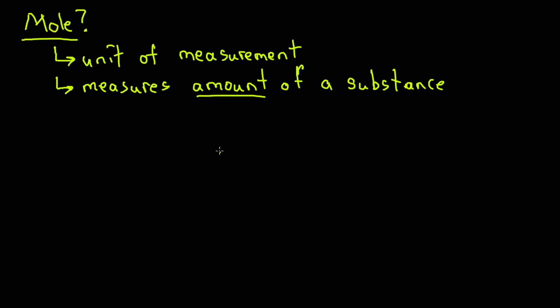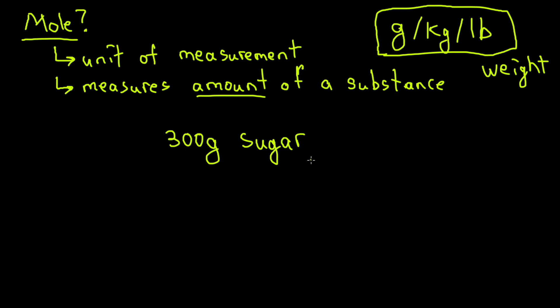You might ask, well I can measure the amount of a substance with things like grams or kilograms or maybe pounds. But that's a fallacy because we're not measuring the amount of a substance, we're measuring the weight of that substance or the mass of it. For example, if I say I've got 300 grams of sugar, we use it in everyday life and we attribute weight to amount, although that is not the same thing. Weight and amount are two separate entities.